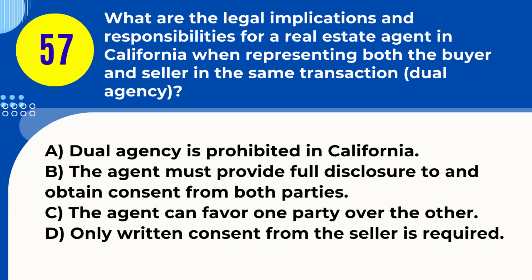Question 57. What are the legal implications and responsibilities for a real estate agent in California when representing both the buyer and seller in the same transaction — dual agency? A. Dual agency is prohibited in California. B. The agent must provide full disclosure to and obtain consent from both parties. C. The agent can favor one party over the other. D. Only written consent from the seller is required. Answer: B. The agent must provide full disclosure to and obtain consent from both parties. Explanation: Dual agency in California is legal, but requires the real estate agent to provide full disclosure about the dual representation and obtain informed consent from both buyer and seller.